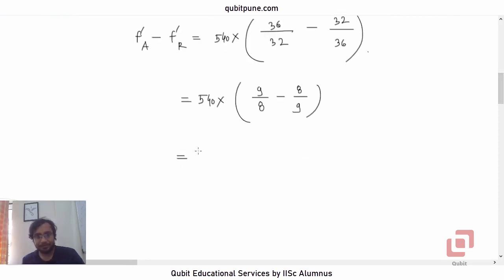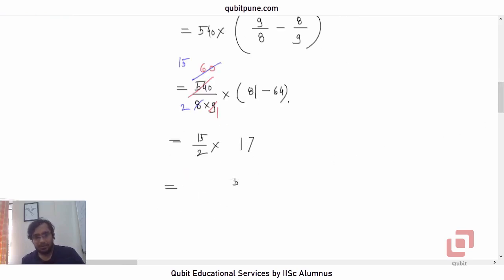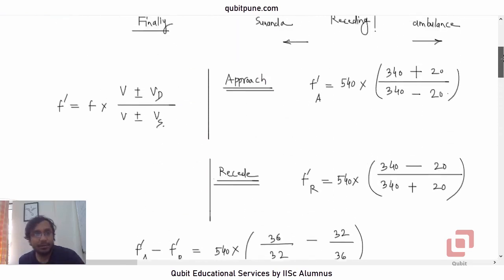That becomes 540 ÷ (8 × 9) × (81 − 64) = 540 ÷ 72 × 17 = (15/2) × 17 = 255/2 = 127.5 Hz. So the change in detected frequency is 127.5 Hz, which is option A.